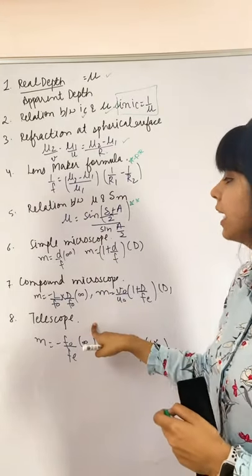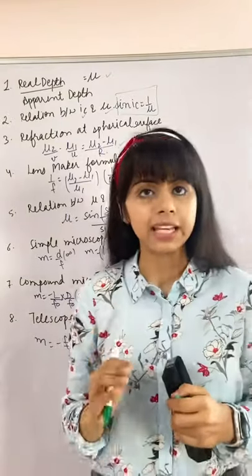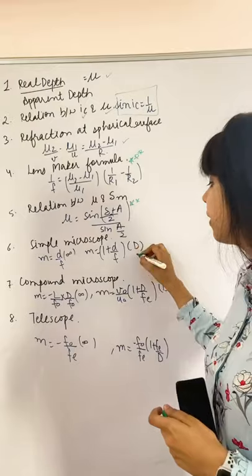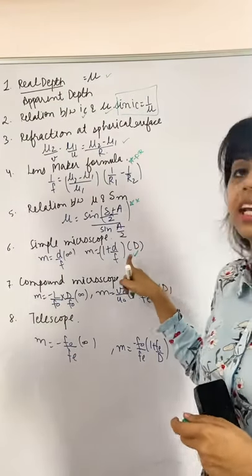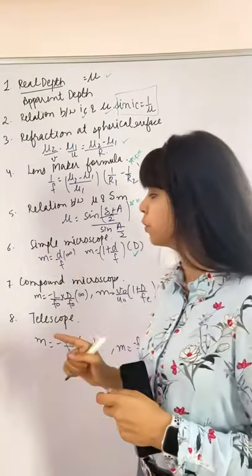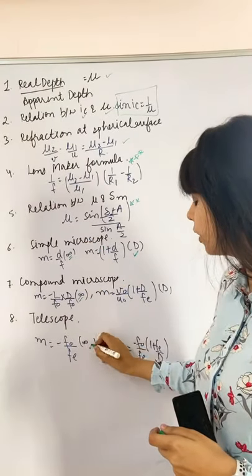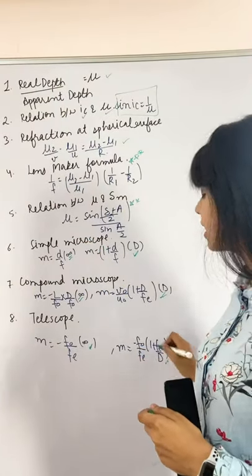Compound microscope and telescope. In these three, diagrams are very important, and also magnifying power. Magnifying power when image is formed at least distance of distinct vision, or when image is formed at infinity. You have to discuss all these cases in these three.